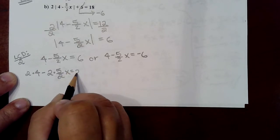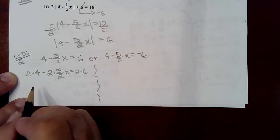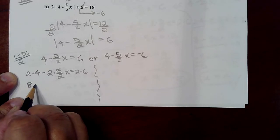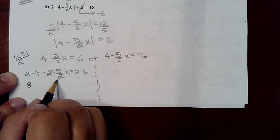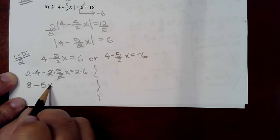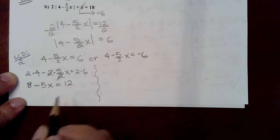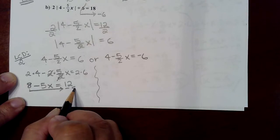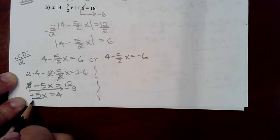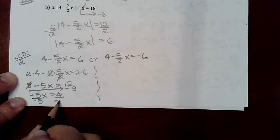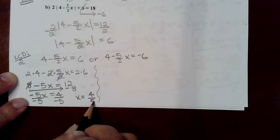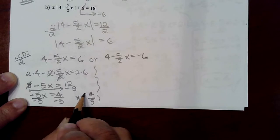So there is 2 times the first term, 2 times five-halves x, and 2 times 6. That gives us 8 for the first term. If you've chosen the proper LCD, you will no longer have fractions — the twos cancel leaving negative 5x for the middle term, and 12 on the other side. Moving the 8 over makes it negative 8, leaving negative 5x = 4, and dividing by negative 5 gives x = -4/5.